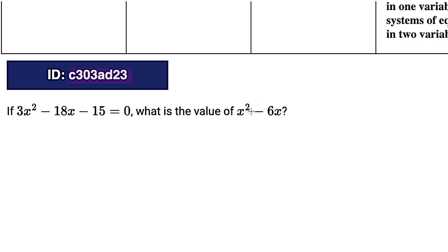So what would happen if we divided the entire equation by 3? Let's see. We have 3x squared minus 18x minus 15. 3 divided by 3 is 1, so we get x squared. Change my color here. We just discussed 18 divided by 3 is 6, and 15 divided by 3 is 5, right? So we're getting closer.